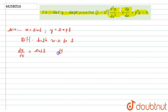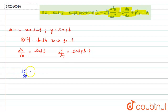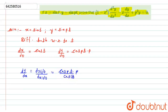Similarly, dy/dt will become equal to cos(pt) into the derivative of pt, which is p. Now dy/dx will become equal to dy/dt divided by dx/dt, so it will become p·cos(pt) divided by cos(t). Let this be equation number one.